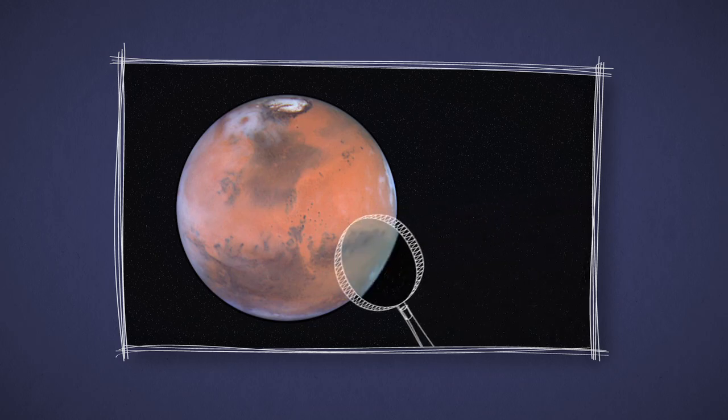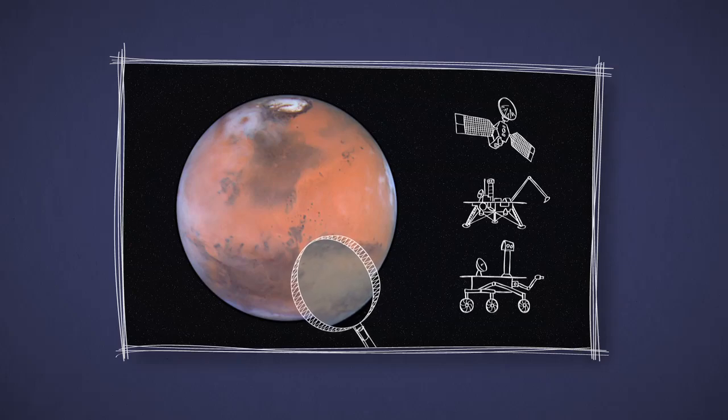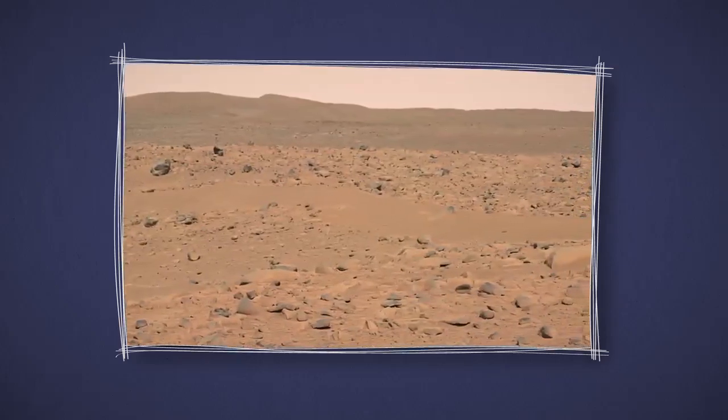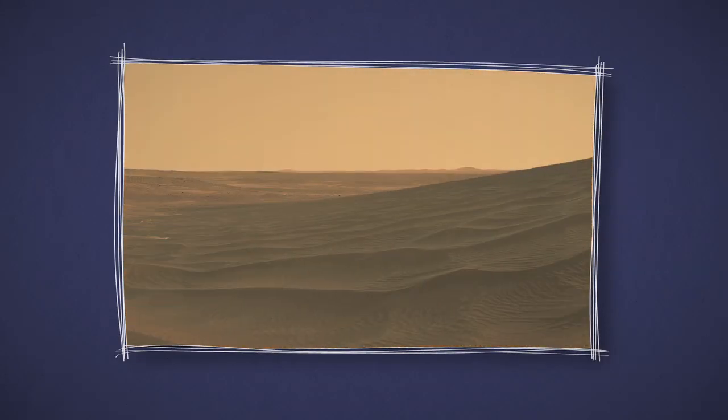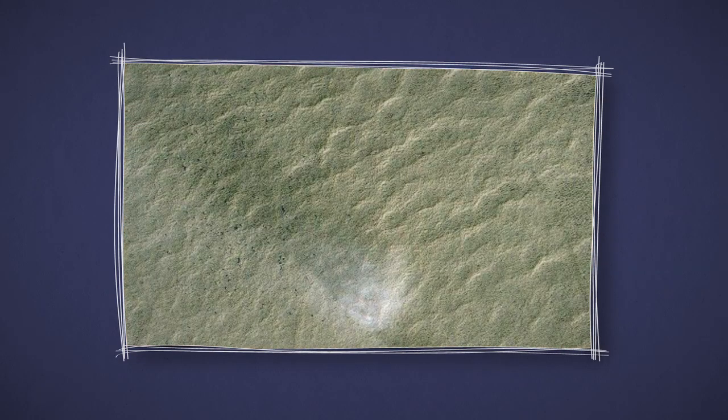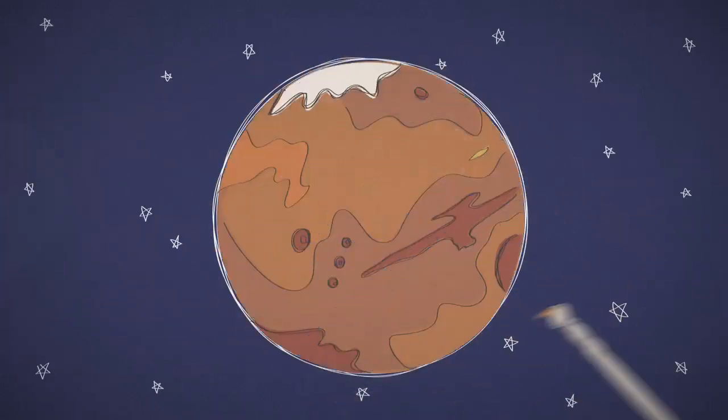But if you get a close-up view with an orbiter, lander, or rover, you'll see that a lot of Mars is actually more of a butterscotch color. Depending on what minerals are around, some landscapes can be more golden, brown, tan, or even a little greenish. So in fact, there are a lot of different colors on what we call the red planet.